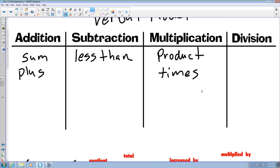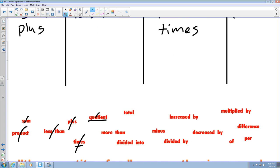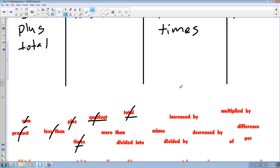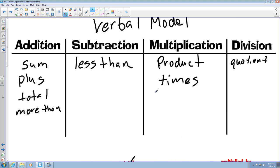So cross that off. Quotient, that would be under division. So quotient. Total, that would be under addition. So total cost of your grocery list, something like that. More than would also be addition. Divided into would be obviously division.